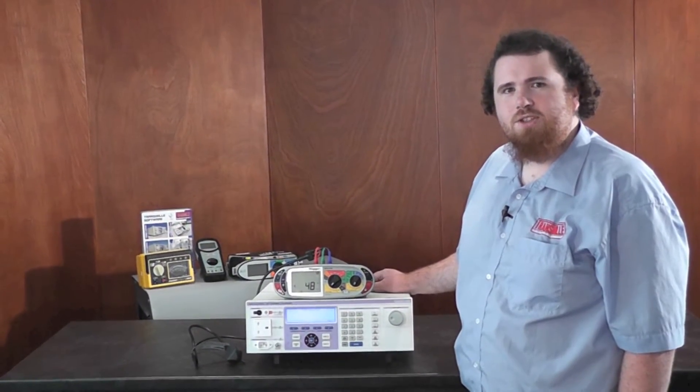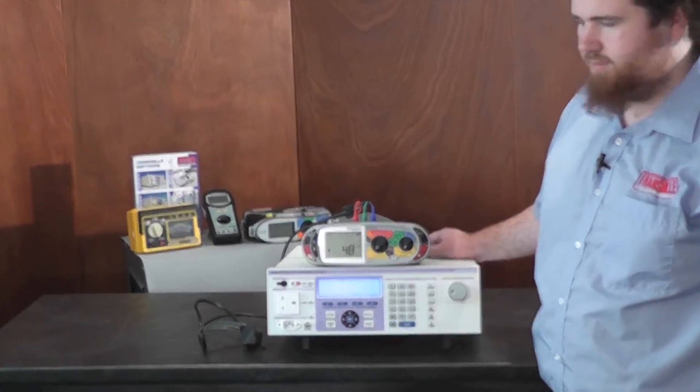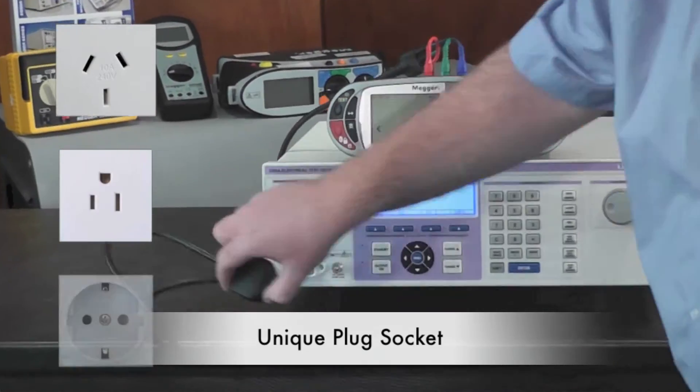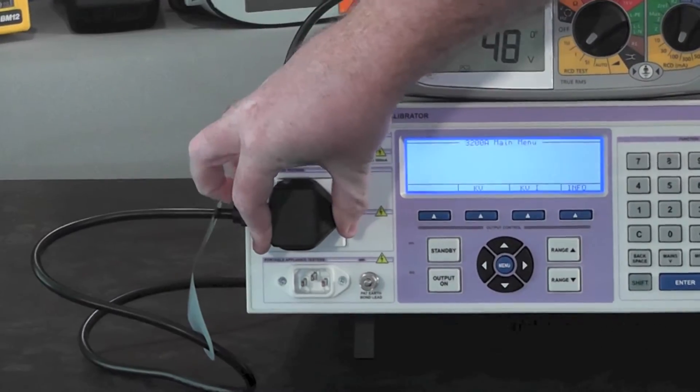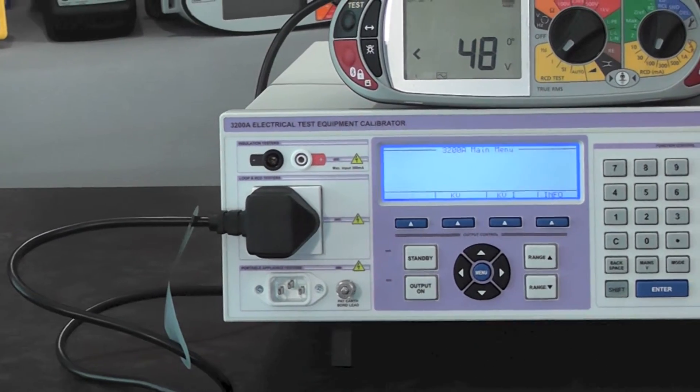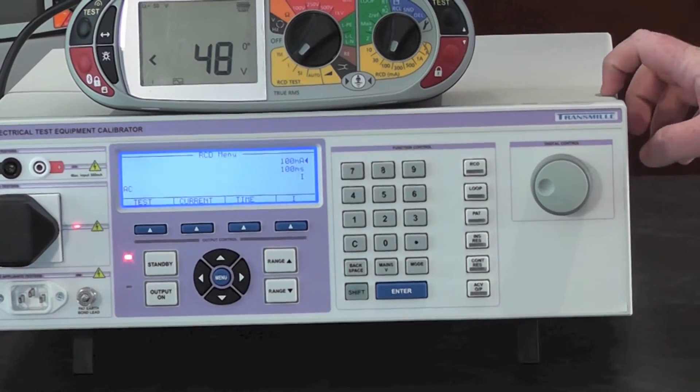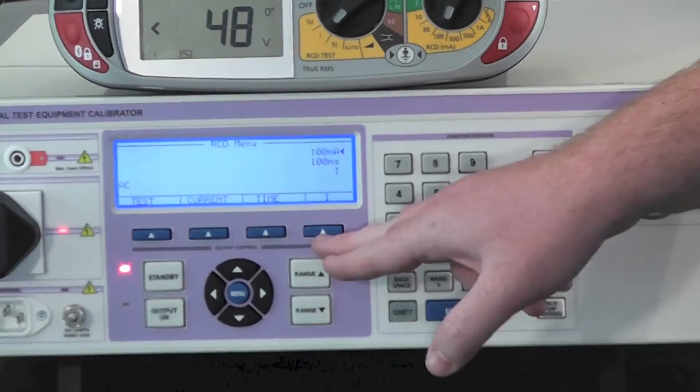Calibrating RCD testers with the 3200A is quick and safe. Using Transmil's unique plug socket on the front of the 3200A testers simply plug in. Using the dedicated RCD key you can then select the current, the time and the current mode required.